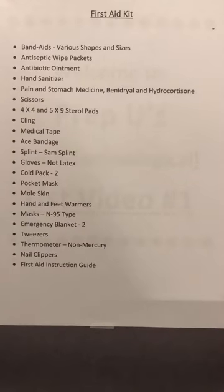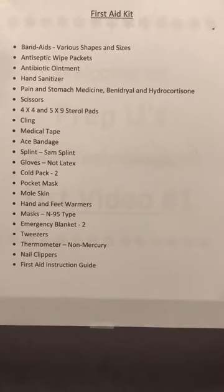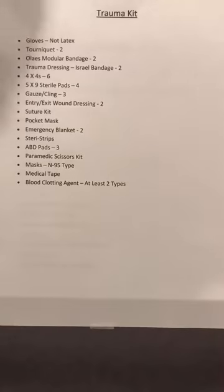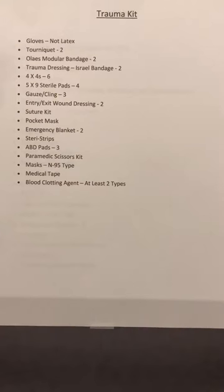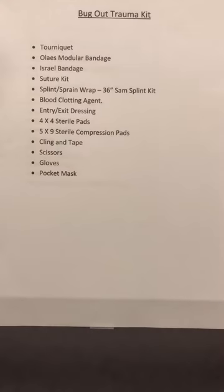The first aid kit should be in your car at all times — you could use it at soccer games, football games, at the beach, or whatever. A lot of these items are really nice to have. Here's a trauma kit — this is the kit that I carry when I go to the range or when I go to school, when I'm out and about. I have used this kit at the range, unfortunately. Don't need to go into details, but it was well used. There's also a bug out trauma kit — if you want to reduce down to a smaller kit for your bug out bag or your get home bag, here's a nice little list for that.